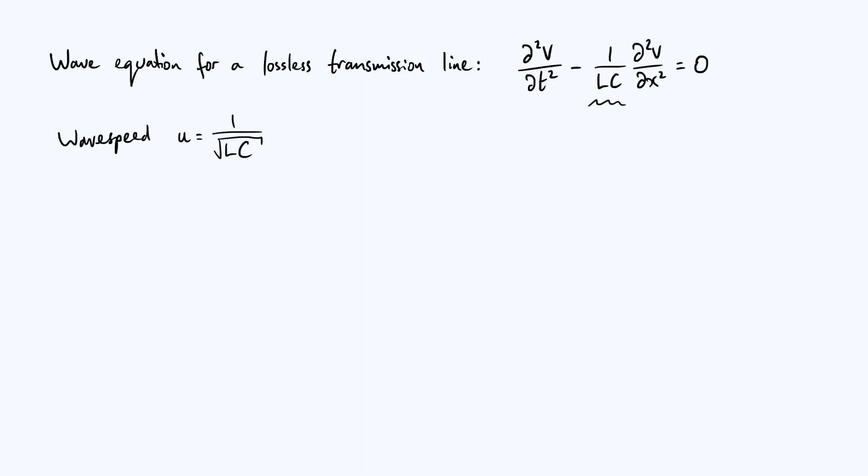What's not straightforward is the actual numerical value of that wave speed. Now something interesting happens when we start considering specific types of transmission line and plugging in expressions for L and C. So let's just consider a couple of different specific geometries that you could construct your transmission line in and the first case I want to consider is a pair of thin parallel wires because this is a case that I've done a couple of videos on already.